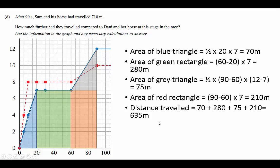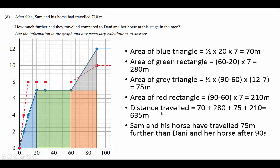If we subtract 635 from 710 that gives us the difference between the two distances. So Sam and his horse have traveled 75 meters further than Danny and her horse after 90 seconds.